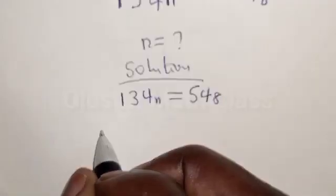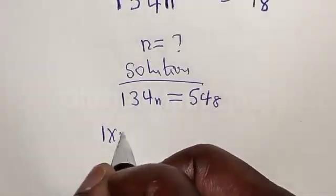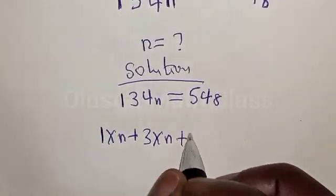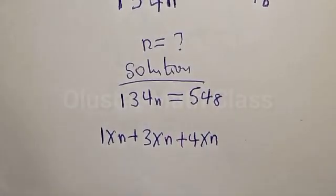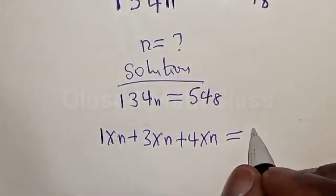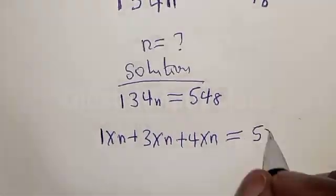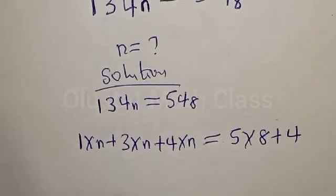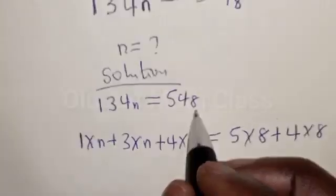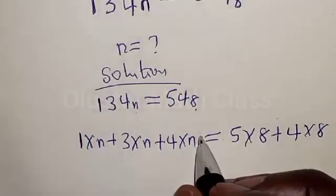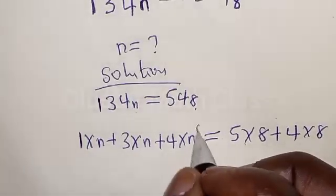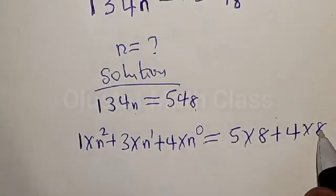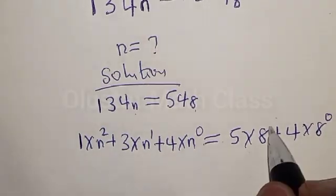How? We have 1 times n, plus 3 times n, plus 4 times n, is equal to 5 times 8, plus 4 times 8. Because this is base 8 and this is base n. The last digit is raised to power 0, then n raised to power 1, and n raised to power 2. The base here is 8: 8 raised to power 0 and 8 raised to power 1.